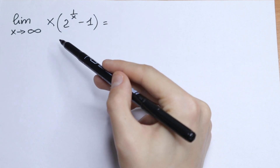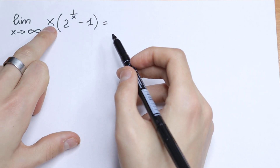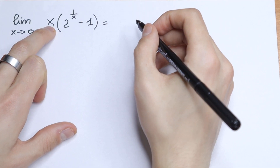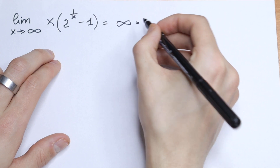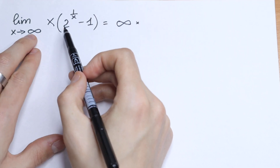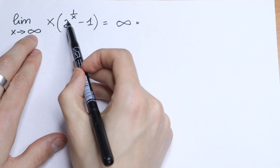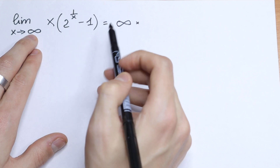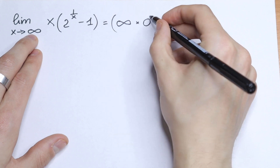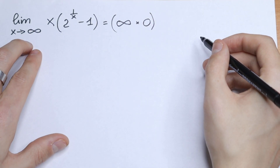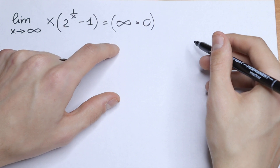First of all we need to plug in infinity. If x approaches infinity, this x approaches infinity as well. So we will have infinity times, and in parentheses, 1 over infinity goes to 0. So we will have 2 to the power 0 minus 1, which equals 0. That gives us infinity times 0, which is of course undefined — so we don't know the value it represents.